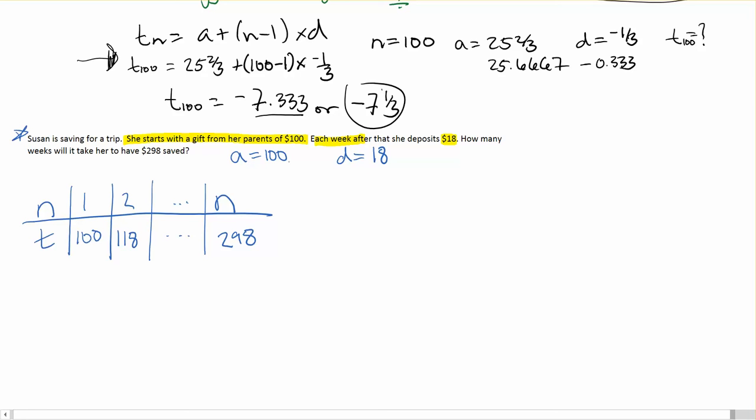So here I know A and I know D. I know T sub N is equal to $298, but what I don't know is N. Let's look at our formula.